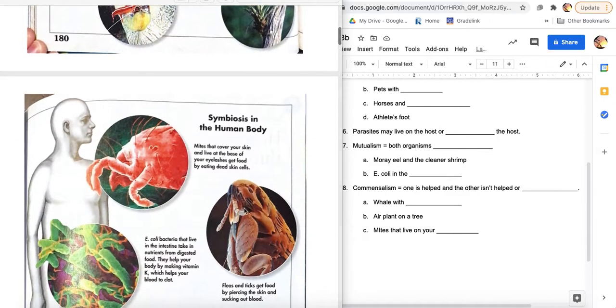So different nutrients doesn't matter. So that's an air plant on a tree. On the next page, this one kind of might freak us out. Mites that cover your skin and live at the base of your eyelashes get food by eating dead skin cells.